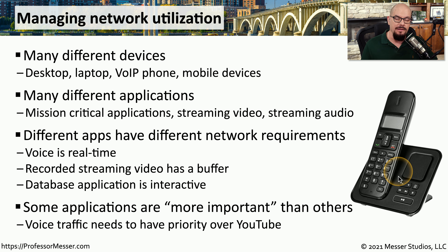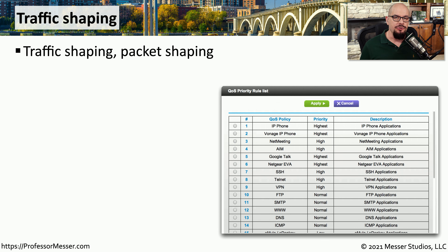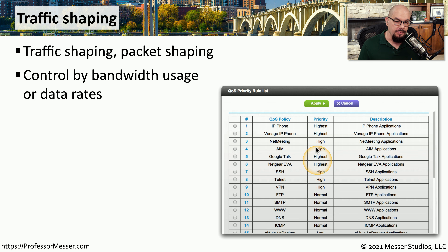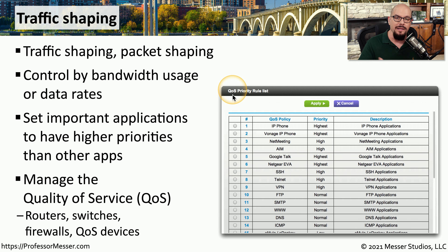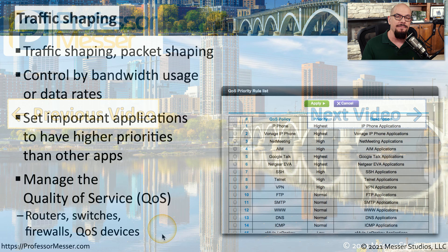If your organization relies heavily on telephone calls, you may want voice over IP communication to have a much higher priority than someone watching a YouTube video. The method for prioritizing traffic on the network is generically called traffic shaping, also referred to as packet shaping. This allows you to set priorities for different applications based on bandwidth usage or data rates. We sometimes refer to this as configuring QoS — quality of service. There are different ways to implement QoS: inside an operating system, configured on routers or switches, or via firewalls and standalone QoS devices.